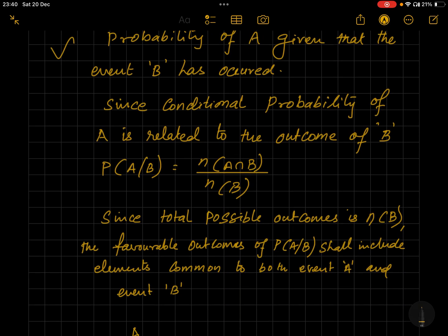Since conditional probability of A is related to the outcome of B, we are using the formula n(A∩B) by n(B). Why are we not using n(S)? Generally we will use, for example, P(A) is equal to n(A) by n(S), but here we are using n(A∩B) over n(B). Why is it so?